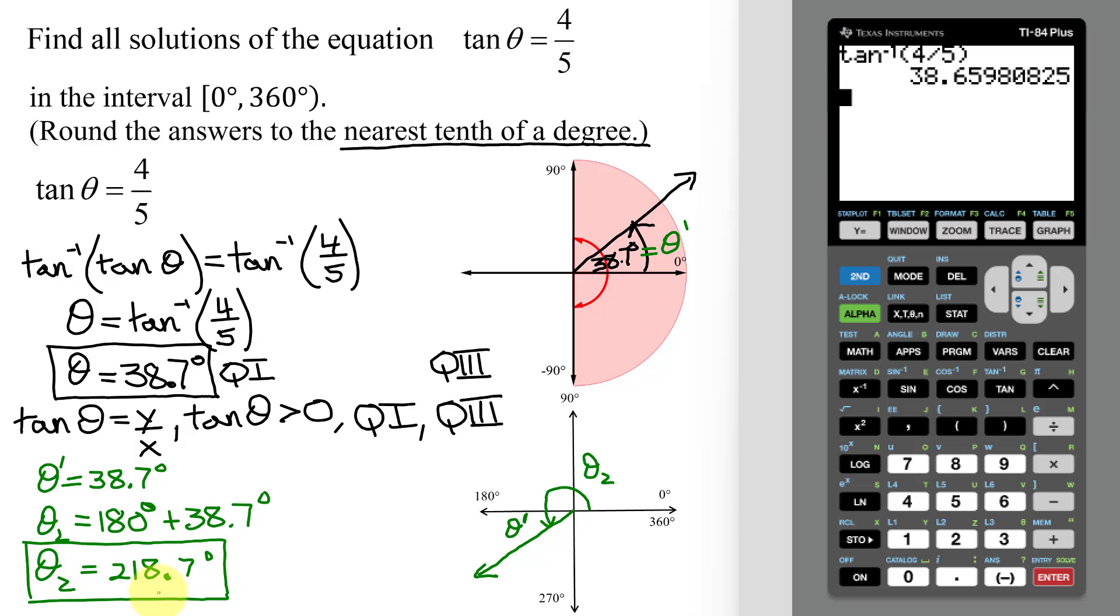So now, how can I check this answer? I can use my calculator, and I can find the tangent of this answer, and it should be approximately four-fifths. So the tangent of 218.7 degrees equals 0.80115, etc. And what does four-fifths equal? Well, four divided by five is 0.8. Are these approximately the same? Yes, they're not going to be identical, because I rounded this answer. But this is a great confirmation you've got this problem correct.